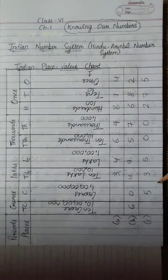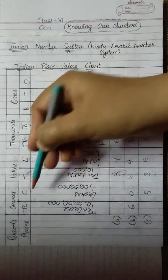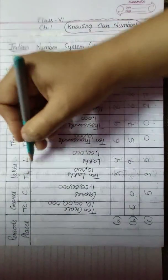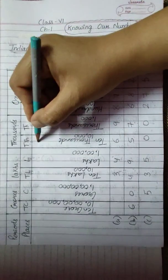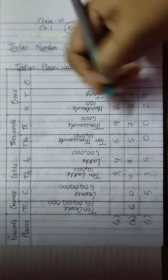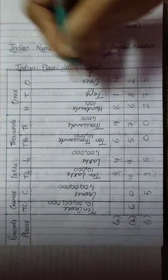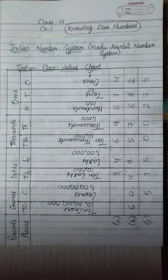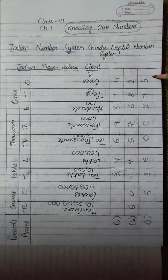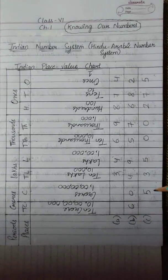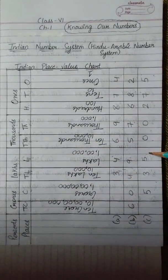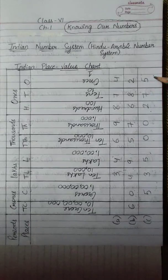See one more example. Here 5 is written in the crores column, 3 is written in the ten lakhs column, 5 is written in the lakhs column, 0 is written in the ten thousands column, 0 is written in the thousands column, 2 is written in the hundreds column, 7 is written in the tens column and 5 is written in the ones column. How will you read this number? We will read this number as five crore 35,275.